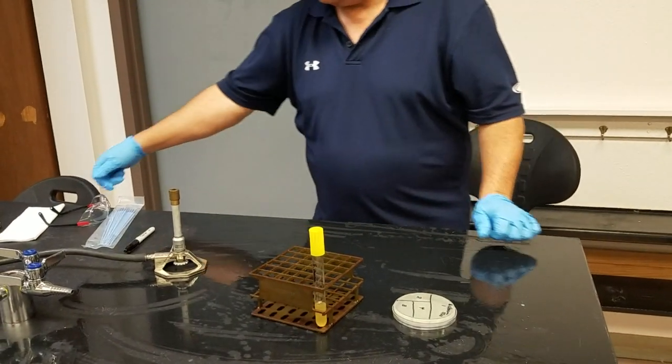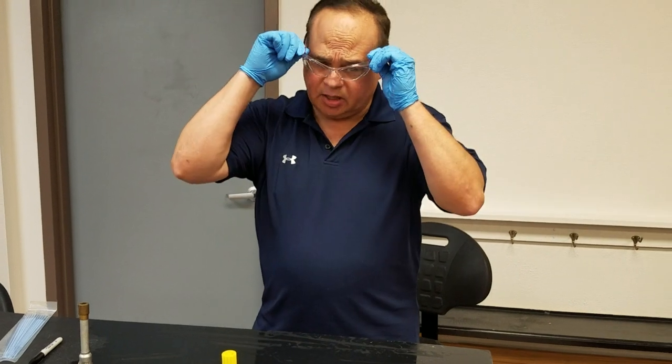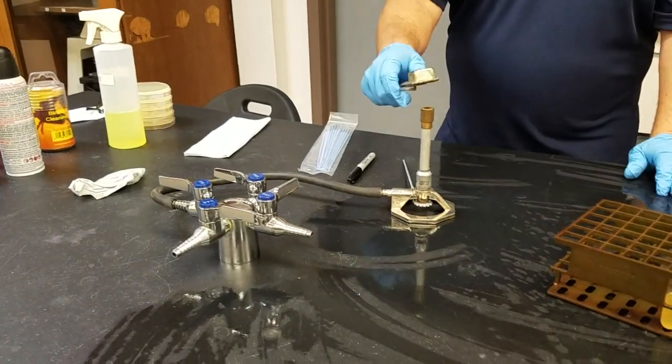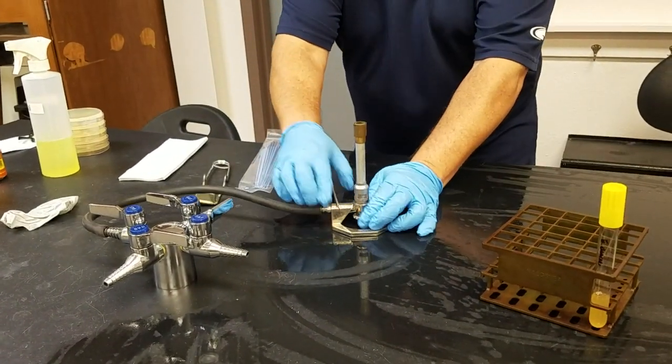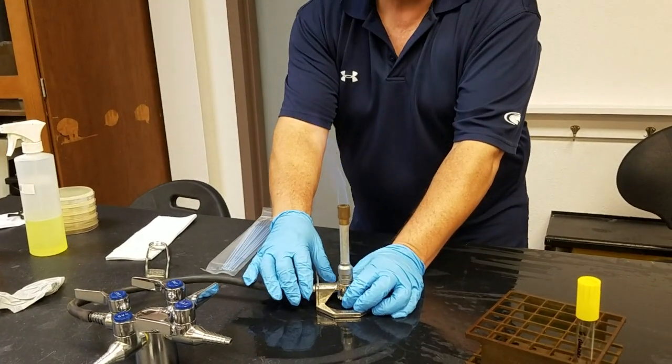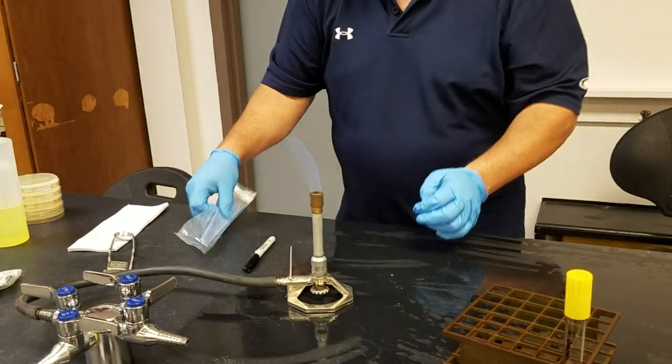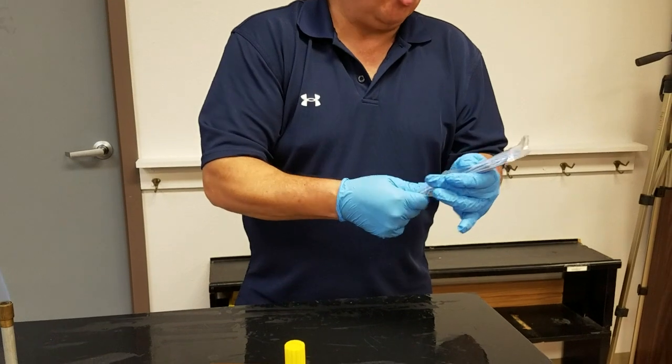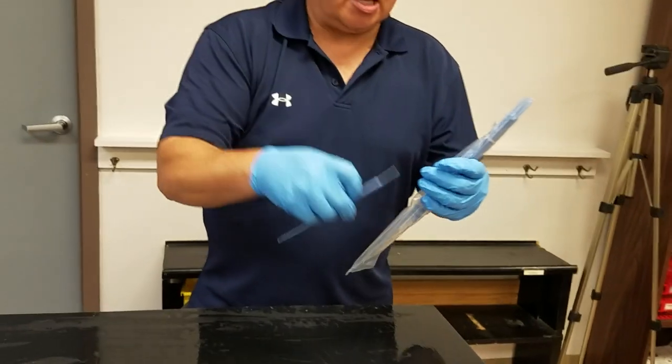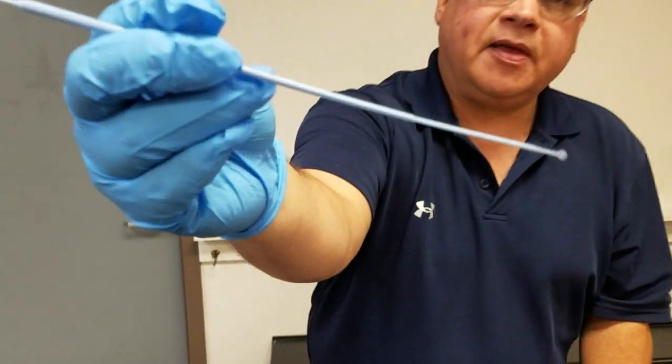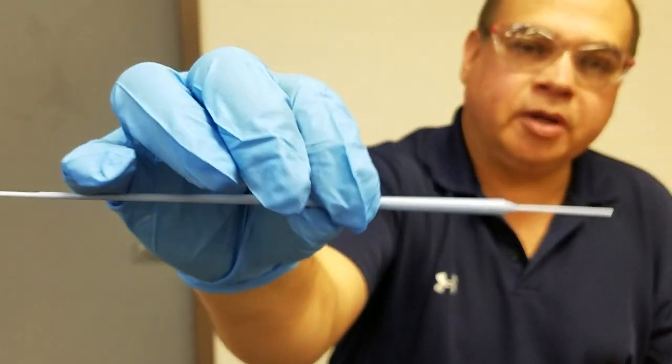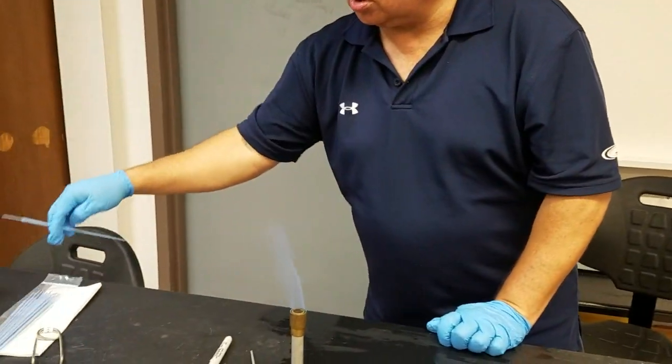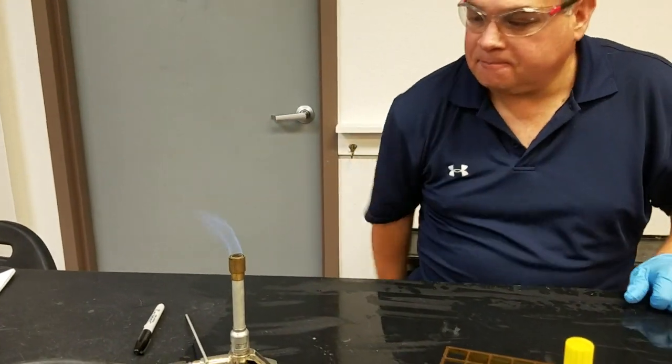There are two different ways to do this. You could use a Bunsen burner, but we also have these loops that have been gamma irradiated. If you don't have access to a flame, you can use a gamma irradiated loop. This is what the loop looks like - on one end there's a loop, and on the other end there's a needle. I'm going to do it with the loop itself.